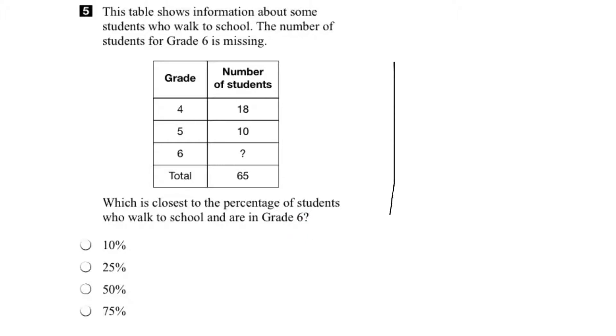Let's try this problem visually. Let's draw a container that represents all the students walking to school. So we know the total number of students is 65, so we could say all the way from 0 to 65 for the total number of students walking to school.